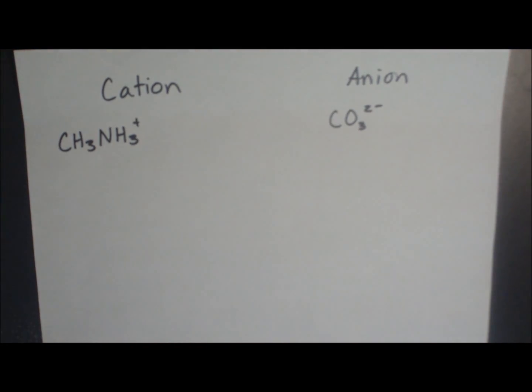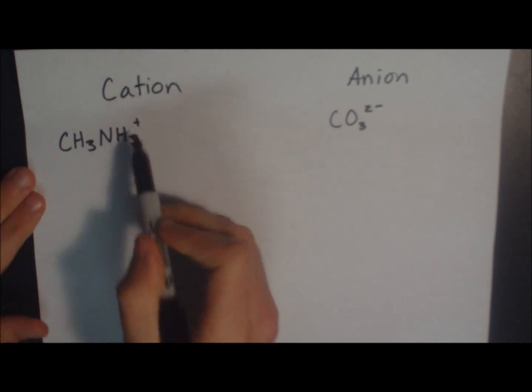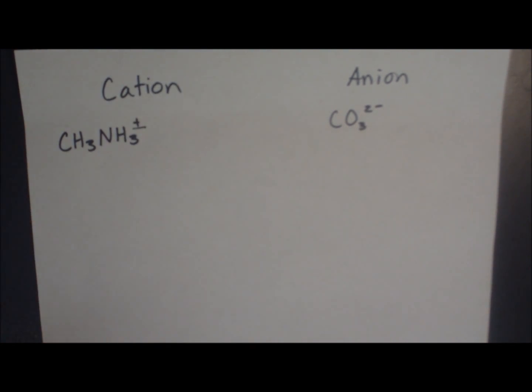Now we start to get a little more complicated. To draw the Lewis structure of a cation, we have to first recognize the positive charge. That positive charge means that it's missing one electron from the molecule.